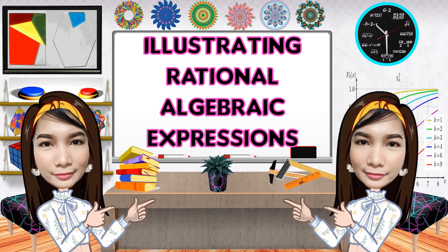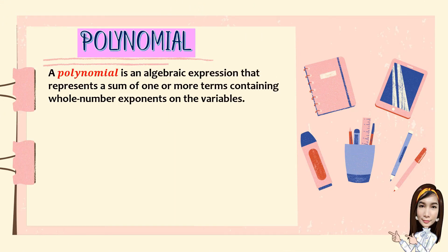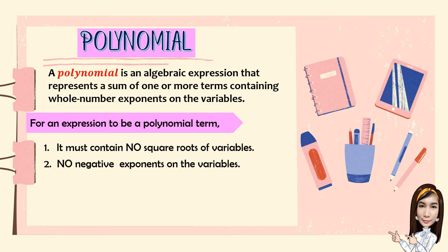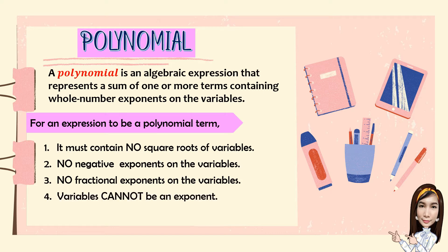A polynomial is an algebraic expression that represents a sum of one or more terms containing whole number exponents on the variables. For an expression to be a polynomial term: first, it must contain no square roots of variables; second, no negative exponents on the variables; third, no fractional exponents on the variables; fourth, variables cannot be an exponent; and fifth, no variables in the denominator of any fractions.